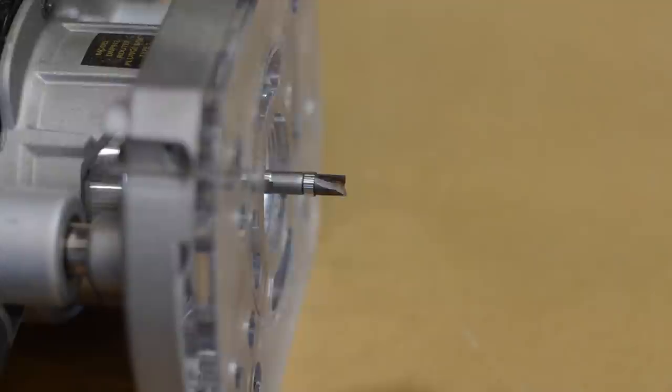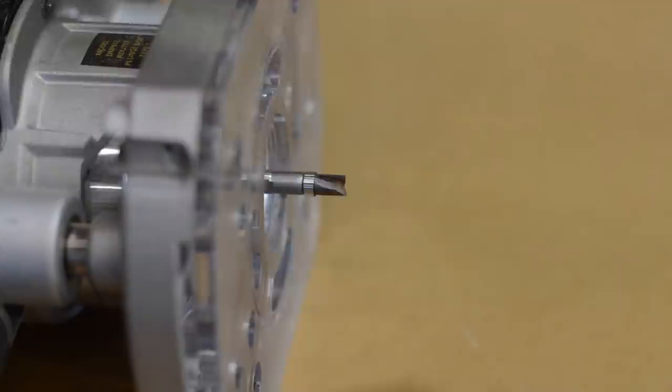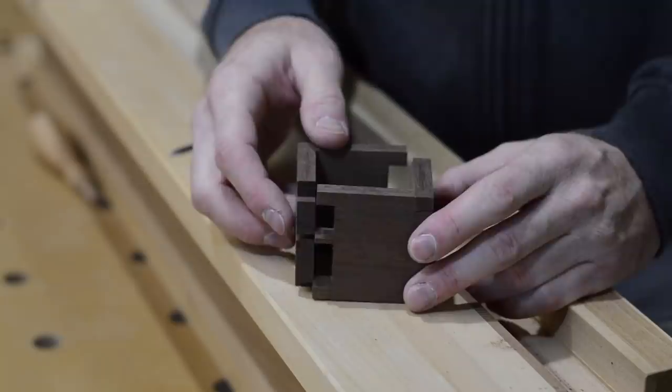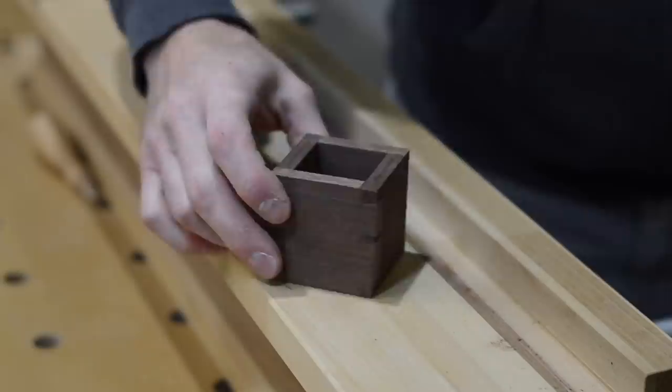I recently picked up a new tiny flush trim bit. This one is made by Amana and as you can see it's about a quarter inch in diameter and it works perfect for these tiny little dovetails. For me, the chiseling part of cutting dovetails is the slowest part. So to be able to do this with a router is a really neat trick and it really speeds up cutting dovetails.